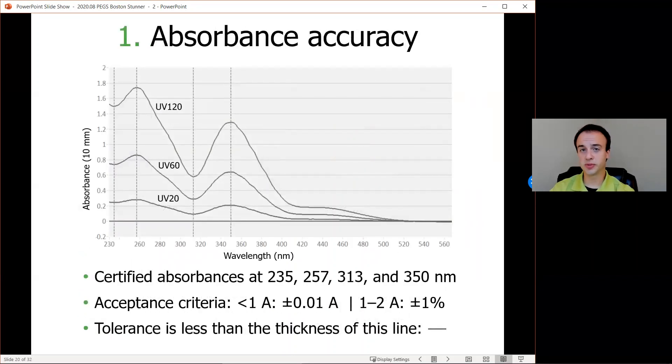Here's a look at the first result for absorbance accuracy with those standards. In this case, we're measuring those four cuvettes six times, and the means and standard deviations are computed at each of the four test wavelengths: 235, 257, 313, and 350 nanometers. Each absorbance spectrum crosses the dashed lines at the four different wavelengths exactly right. To visually show how narrow the tolerances are for what those absorbance values must be, each spectrum must be accurate to less than the thickness of the line shown in the bottom right.